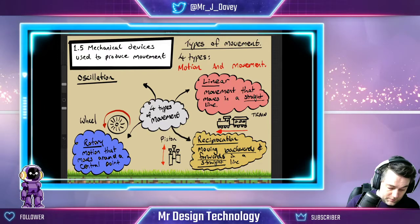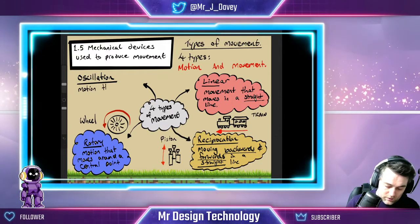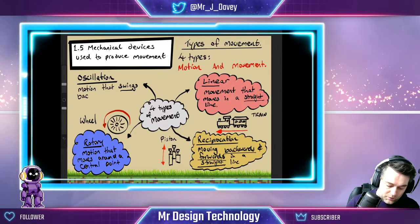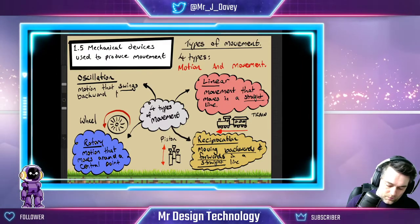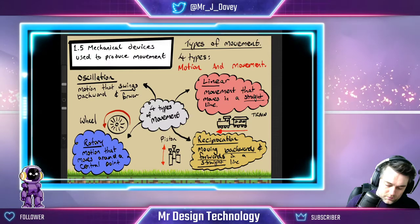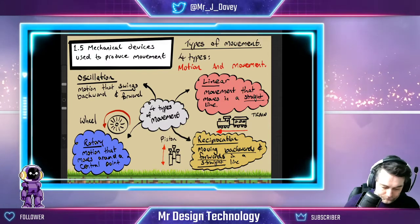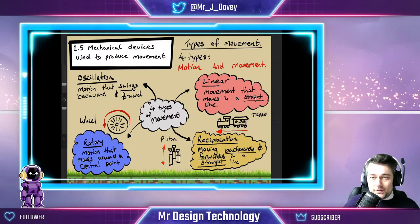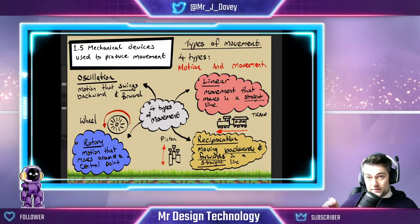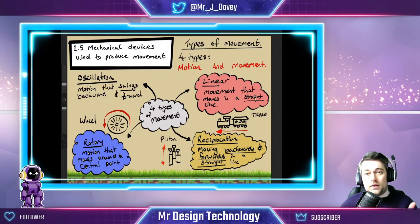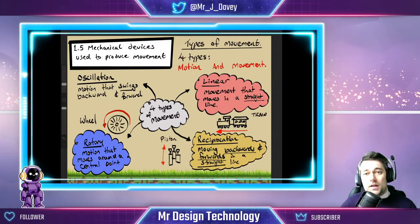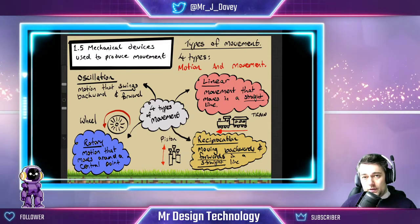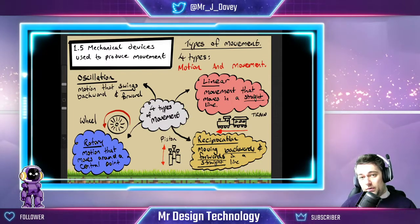So oscillation is a motion that swings backward and forward. Remember how for linear and reciprocation we underlined the word 'straight'? That's because of oscillation — oscillation swings. If your exam asks you to name the movement that goes backwards and forwards, unless they've said it's swinging, it will be reciprocation. If they specify it's swinging backwards and forwards, then it's oscillation.